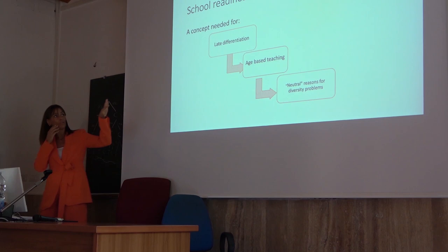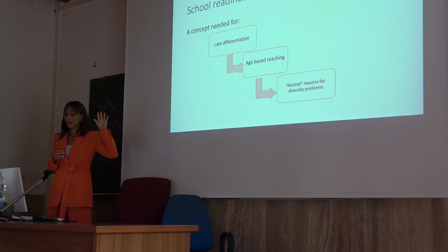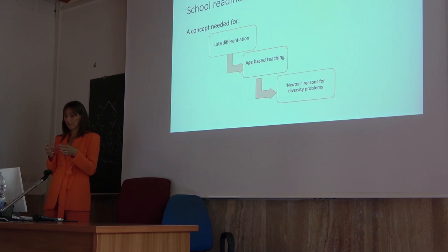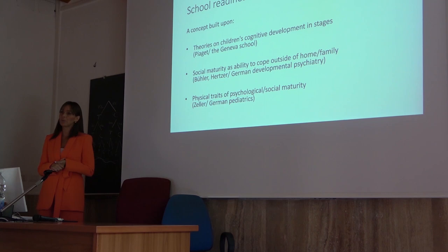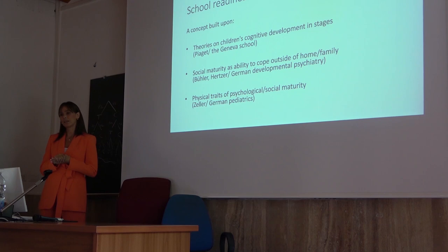School readiness was a concept that was needed for the late differentiation desired with a unified school — an age-based teaching that still required some sort of sorting, because there were many kids who didn't fit in age-based teaching. Neutral reasons were needed for this diversity problem. The concept of school readiness was built upon theories of children's cognitive development in stages, social maturity as ability to cope outside of home and family, and physical traits of psychological and social maturity.